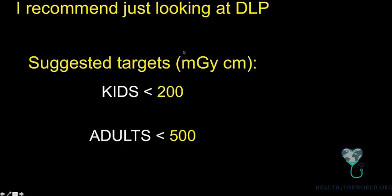Looking at the DLP gives you the best sense of what dose your patient received for a study. For an abdomen-pelvis — a higher cancer risk region — try to keep pediatric doses under 200 milligray-centimeter and adult doses under 500 milligray-centimeter. The rest of this lecture will discuss how to achieve those targets. These numbers aren't perfect — they're based on our own data — but they're the numbers to memorize.